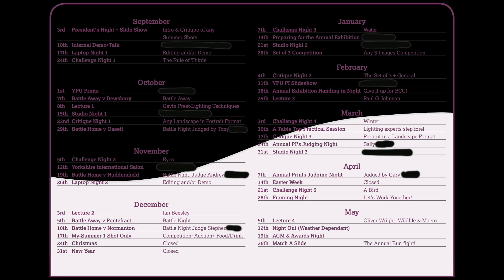We also look at prints from across the whole Yorkshire area. We have a few battles either at home or away with other camera clubs — the committee choose images from last year's members' work, both projected and printed, and put the best of them into a battle against other clubs. They're judged by an independent judge and the totals are added up on the night, and whoever gets the most wins.